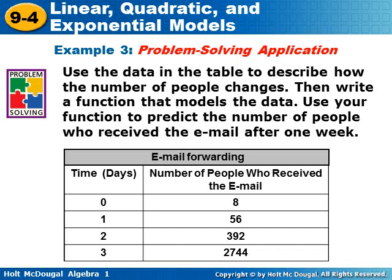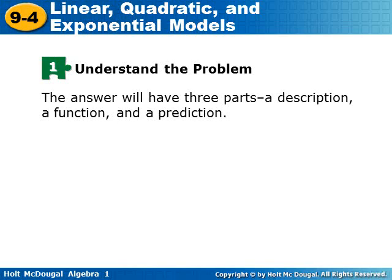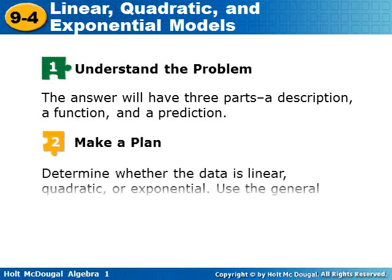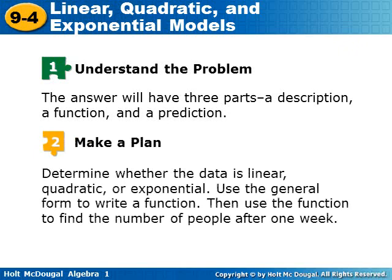Use the data in the table to describe how the number of people changes, then write a function that models the data. Use your function to predict the number of people who received the email after one week. The answer will have three parts: a description, a function, and a prediction. The plan is to determine whether the data is linear, quadratic, or exponential, use the general form to write the function, and then use the function to find the number of people after one week.